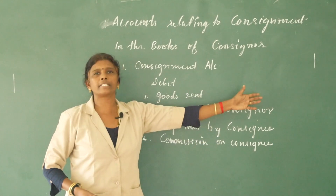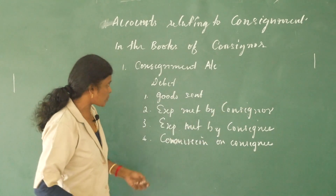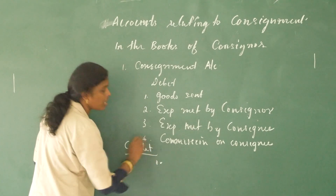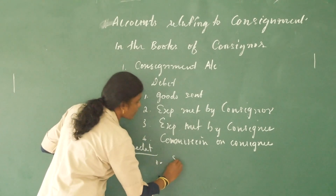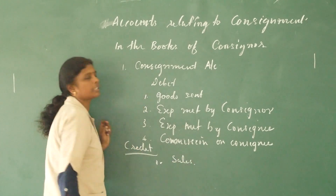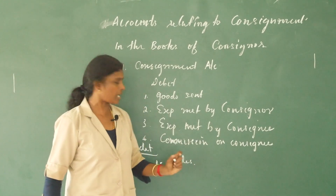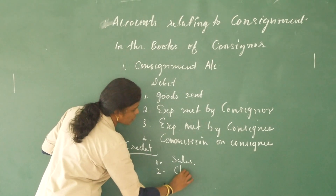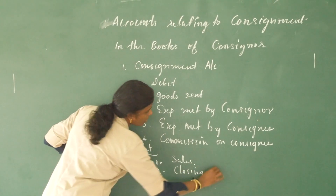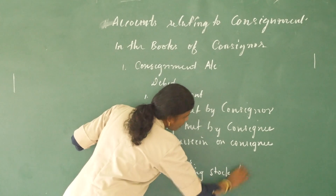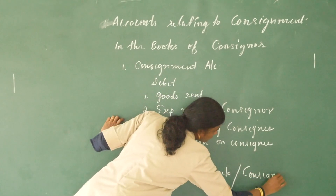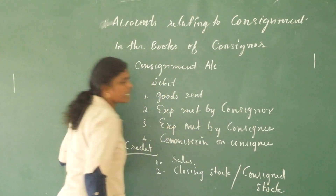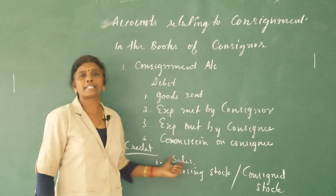What are the items credited? First, sale proceeds — that is, how much goods are sent to the consignment and sold. Next, closing stock or consigned stock — that means unsold stock remaining with the consignee. These are the items credited in this account.